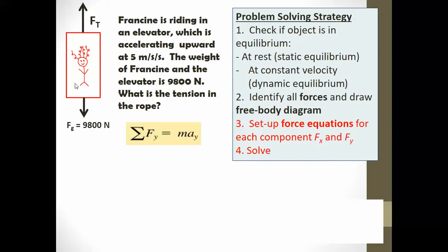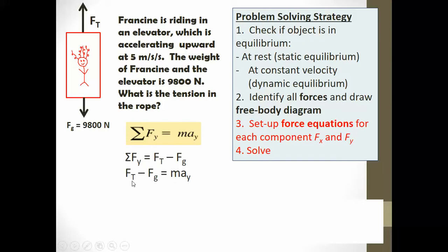We use the sum of forces in the y-direction equals m times a_y. It's not equal to zero for a dynamic system. So we add our forces in the y-direction: force of tension minus the force of gravity equals the mass times the acceleration in the y-direction. You sum your forces on the left and set it equal to m·a_y on the right.